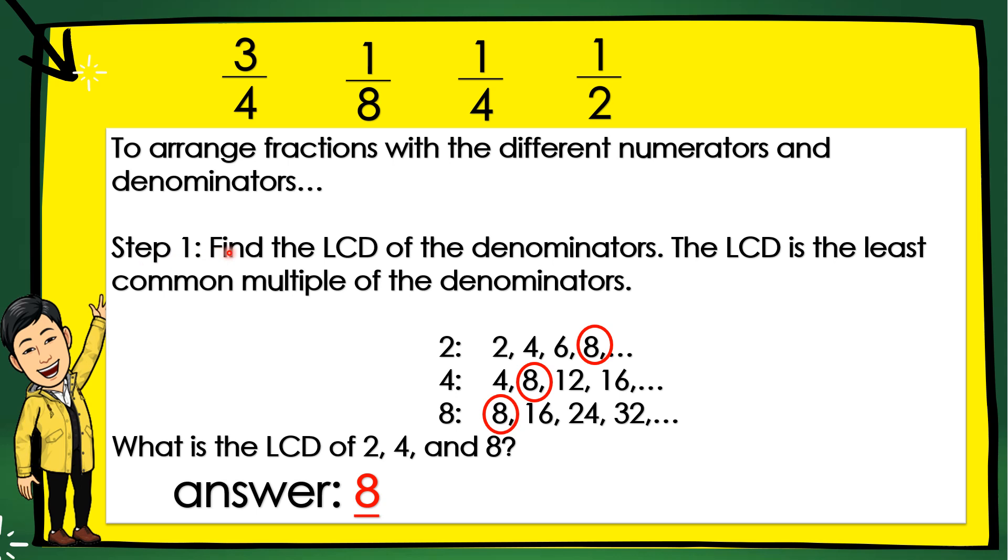Step 1: Find the LCD of the denominators. The LCD is the least common multiple of the denominators. So, here, what is the LCD of 2, 4, and 8? The answer is 8.